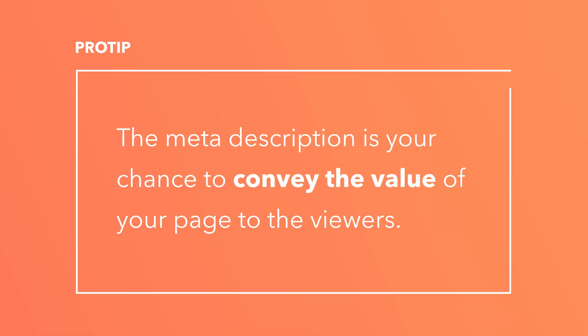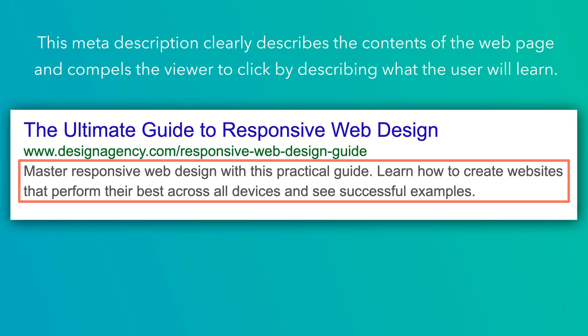First, you're going to want to spend some time writing compelling content. This should be a short sentence previewing the content or telling the searcher why they should give your post a read. Give them a clear benefit of clicking through and reading your post, if necessary. When writing your meta description, be informative and then add value. The meta description is your chance to convey the value of your page to your viewers. This meta description clearly describes the contents of the webpage and compels the viewer to click by describing exactly what the user will learn.